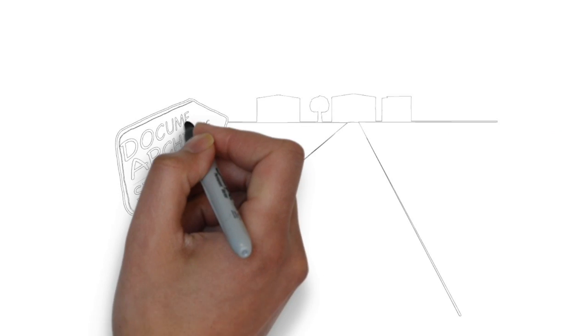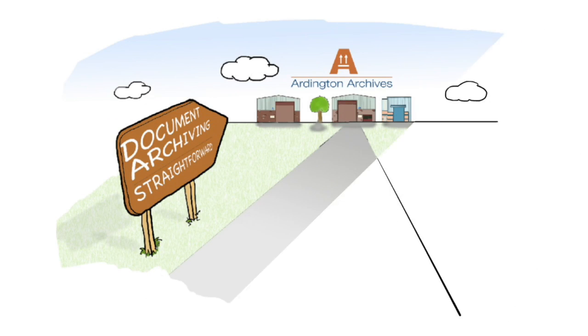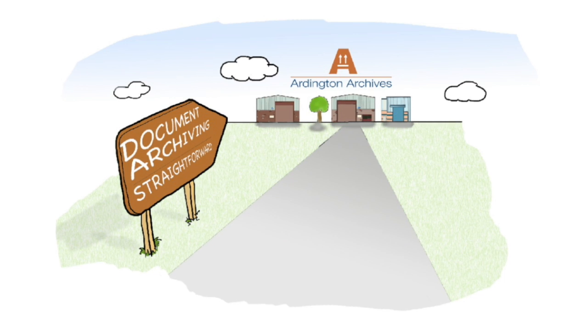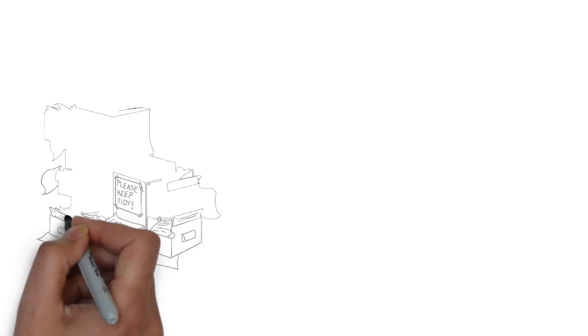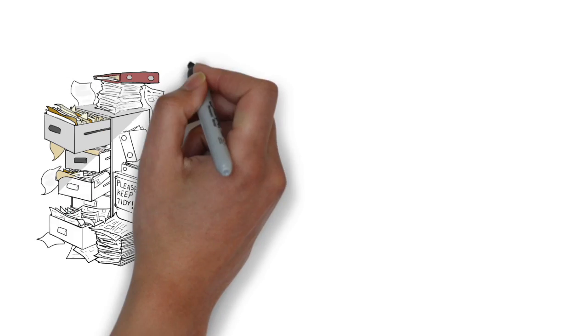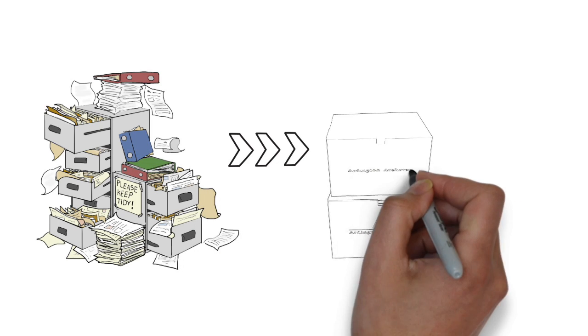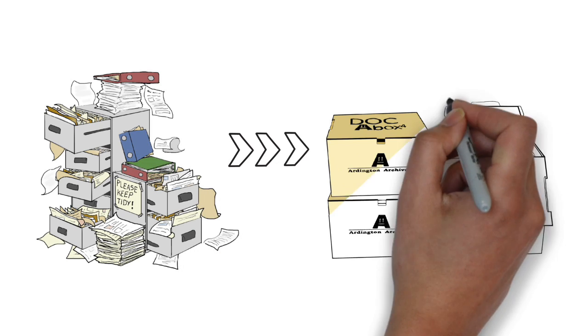At Ardington Archives, we make the document archiving process seamless and straightforward for you. Our process starts with assessing your archiving needs. We convert records in filing cabinets and documents in ring binders into custom-designed boxes to be stored.